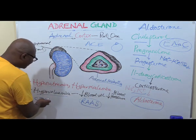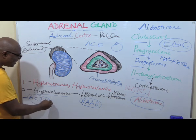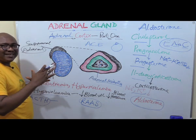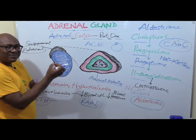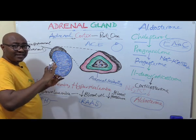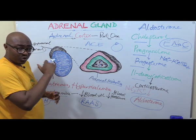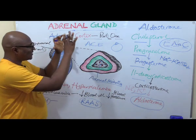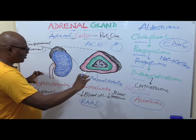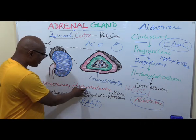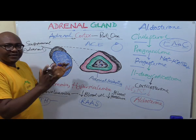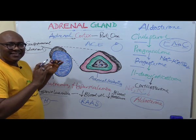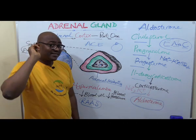ACTH, mainly through stress, is released. But it is mainly in the control of the zona fasciculata, which we are going to deal with next. It helps in the secretion of the hormone known as cortisol, which is the glucocorticoid. So this is aldosterone for you — how it is made, the functions, how it corrects hyponatremia, hyperkalemia, and low blood pressure resulting from low blood volume. See you in the next video.